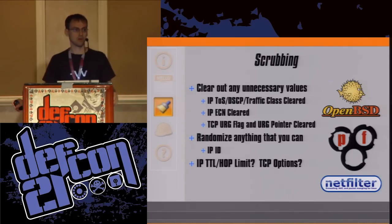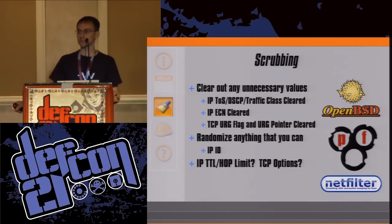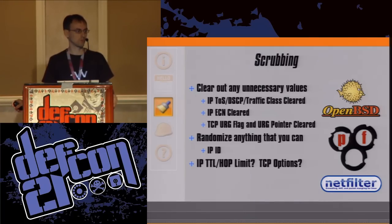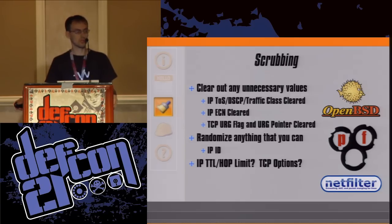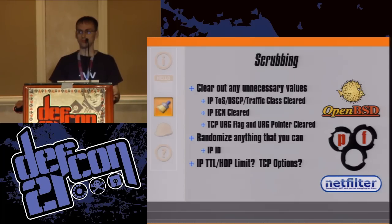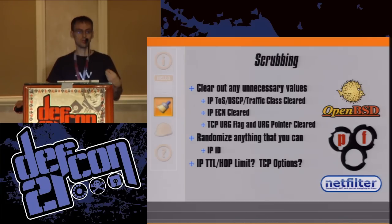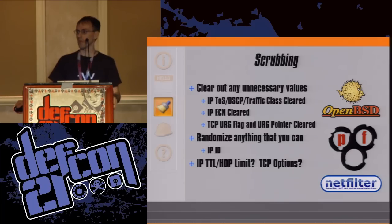The algorithm I developed to disrupt that pattern starts off with some scrubbing. The idea is to leave as little behind as possible for that fingerprint — don't give them an inch. You clear those necessary values out like the IP type of service, IP ECN, TCP urge flag and urge pointer. NMAP also uses reflection probes — it will inject values into a probe and look for those values to be returned. Some unusual operating systems will mirror values back in the response, and NMAP identifies them that way. By clearing those fields, you take care of that reflection probe.